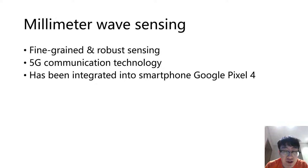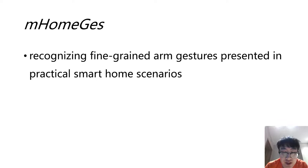In this paper, we propose a millimeter wave-based gesture recognition system called mHomeGest, aiming at timely recognizing fine-grained arm gestures presented in practical smart home scenarios along with complex interference. To achieve this goal, mHomeGest overcomes three main challenges.